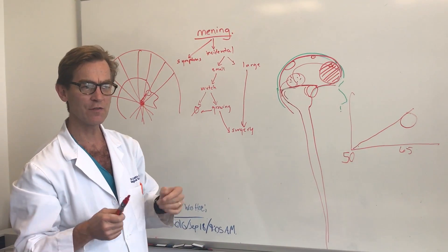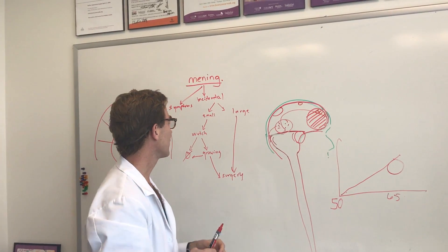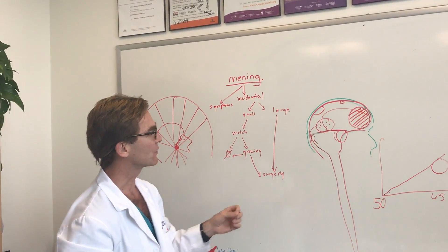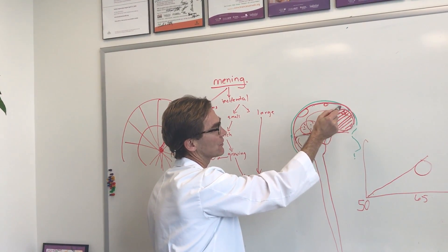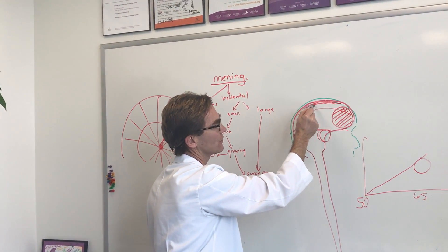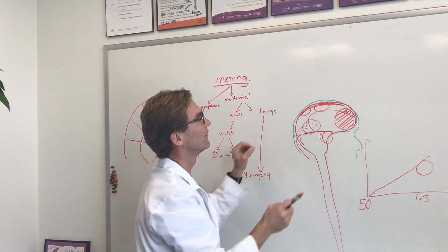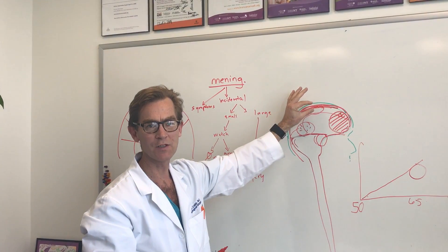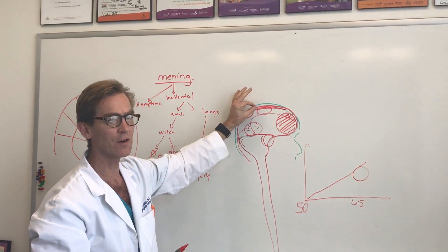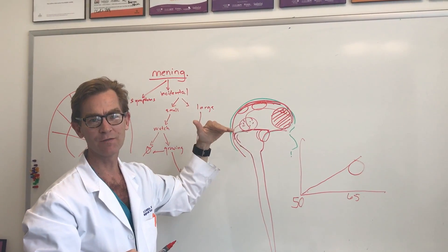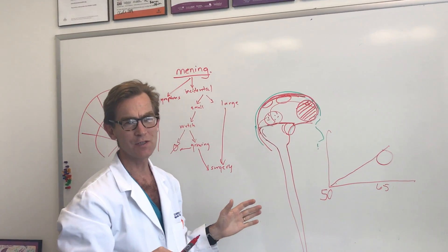I do a lot of meningioma surgeries myself and usually the goal is to try to get all of the meningioma out. Although occasionally I have done cases where the tumor may be stuck to an important vein. For instance this vein up here is called the superior sagittal sinus, and often they'll be stuck in this vein. You don't want to go in to damage that vein because it can cause a serious life threatening problem. If you leave a little tumor there you can either watch it or else treat it again with radiosurgery.